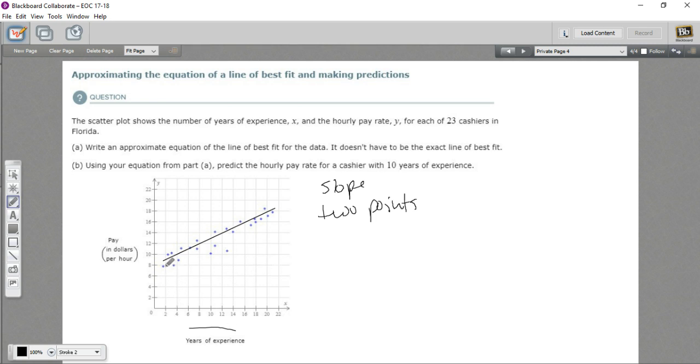Right here at 2, it seems to be about halfway between the 8 and the 10. So I think the point (2,9) is on here or close enough. And then let's see, where else does it look like it crosses the grid lines? Well, here at (8,12), it looks like it comes pretty close to being on the mark there. So I'm going to pick those two points.